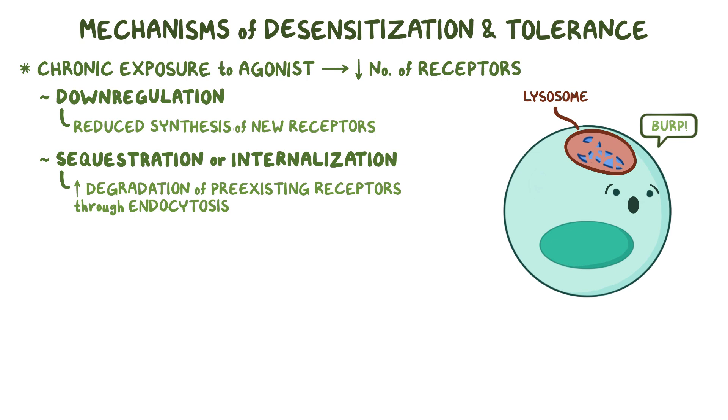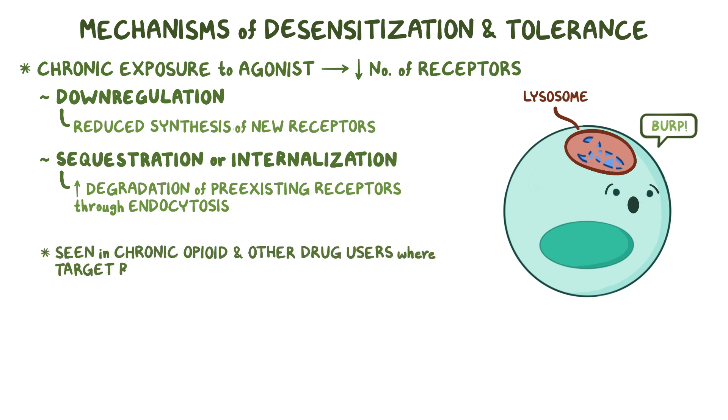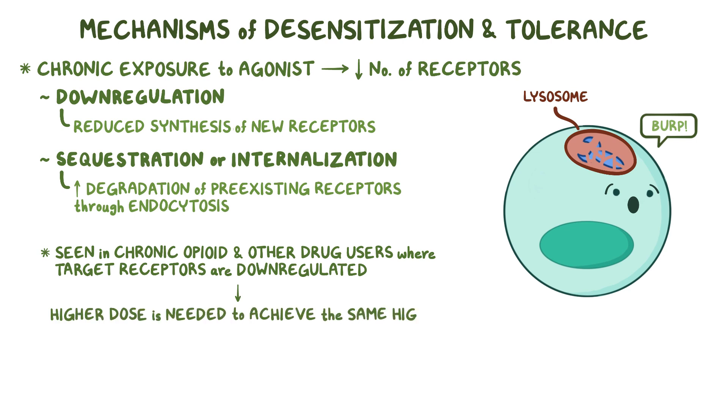This phenomenon can also be seen in chronic opioid and other drug users, where the target receptors are downregulated, so a higher dose is needed to achieve the same high.